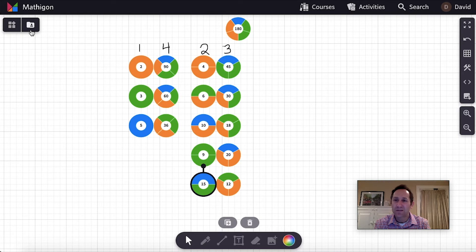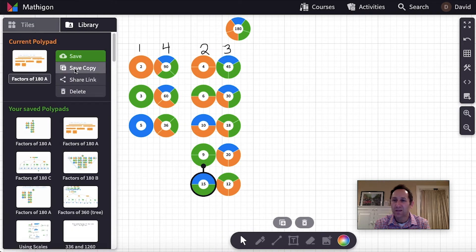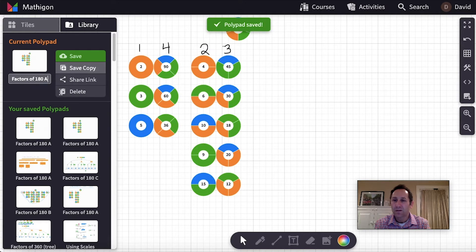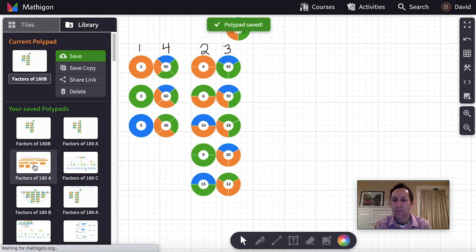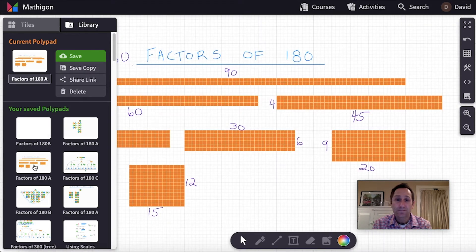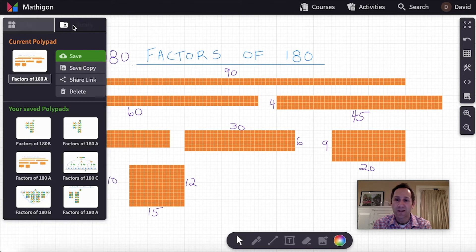Now, I want to save this canvas here. So I'm going to save this as a copy. I'll call this 180B. Now that I've changed it a different name, let me save it again. And I'm going to go back over here to the one that we had made as a class using the number tiles.